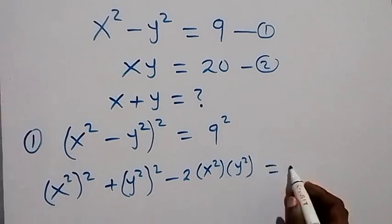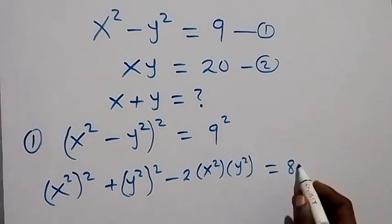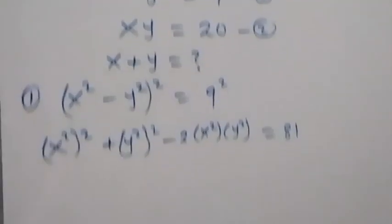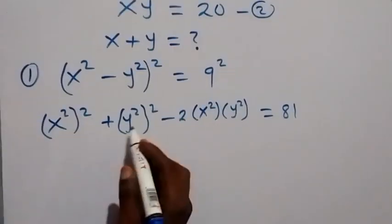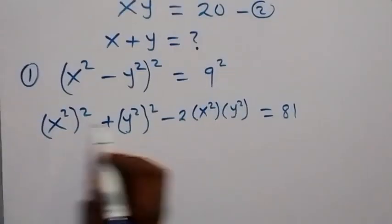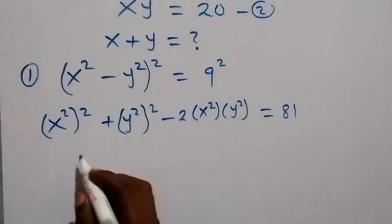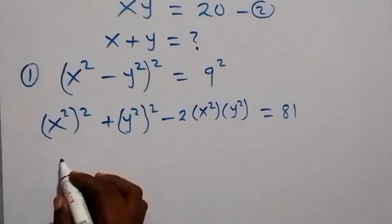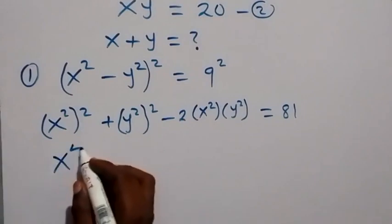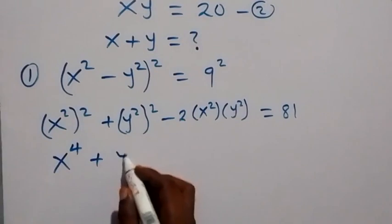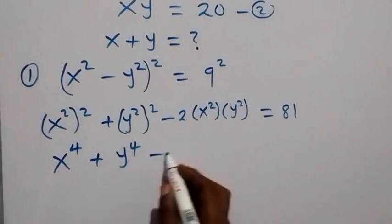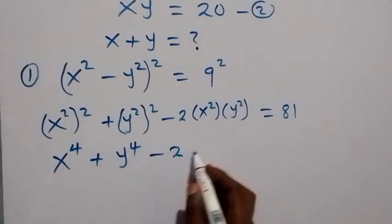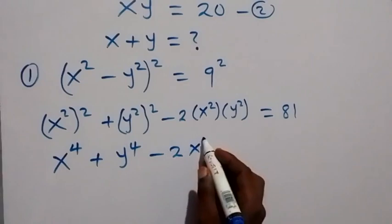So that is the expansion, which equals 81 on this side. From here, when we simplify further, this power multiplies and gives us x raised to power 4 plus y raised to power 4, then minus 2x squared.